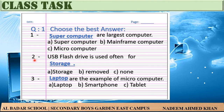Number two — USB flash drive is often used for Dash. Option A: Storage, Option B: Removal, Option C: None. USB flash drive کا استعمال Storage کے لیے ہوتا ہے۔ Answer: Option A — Storage.